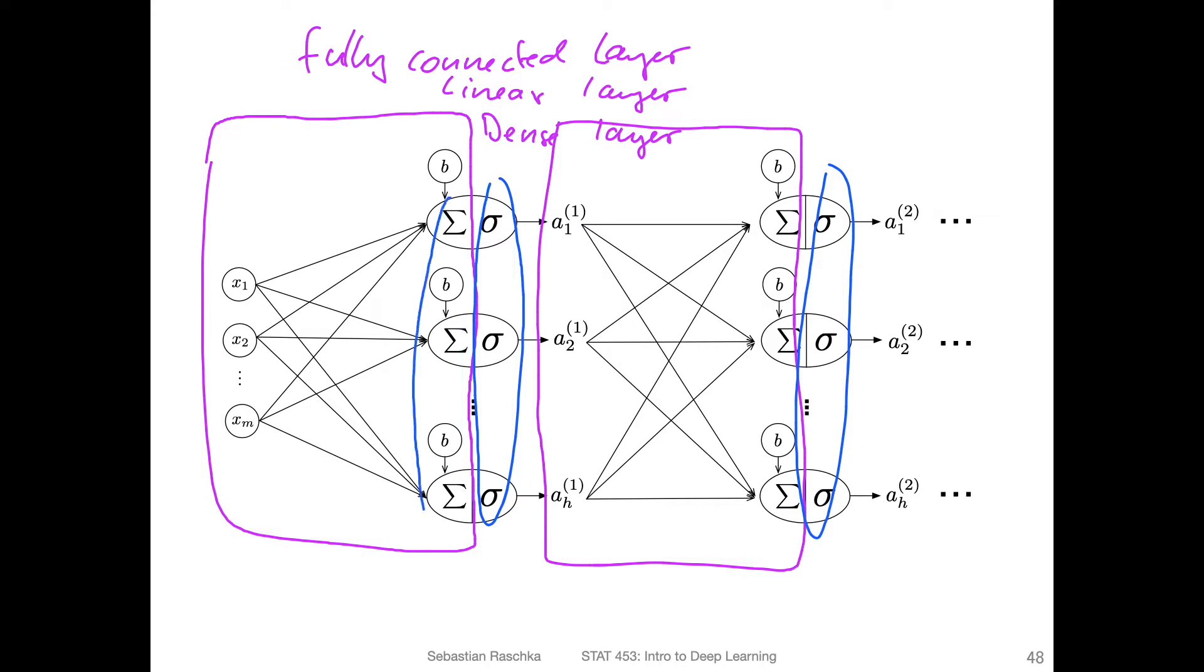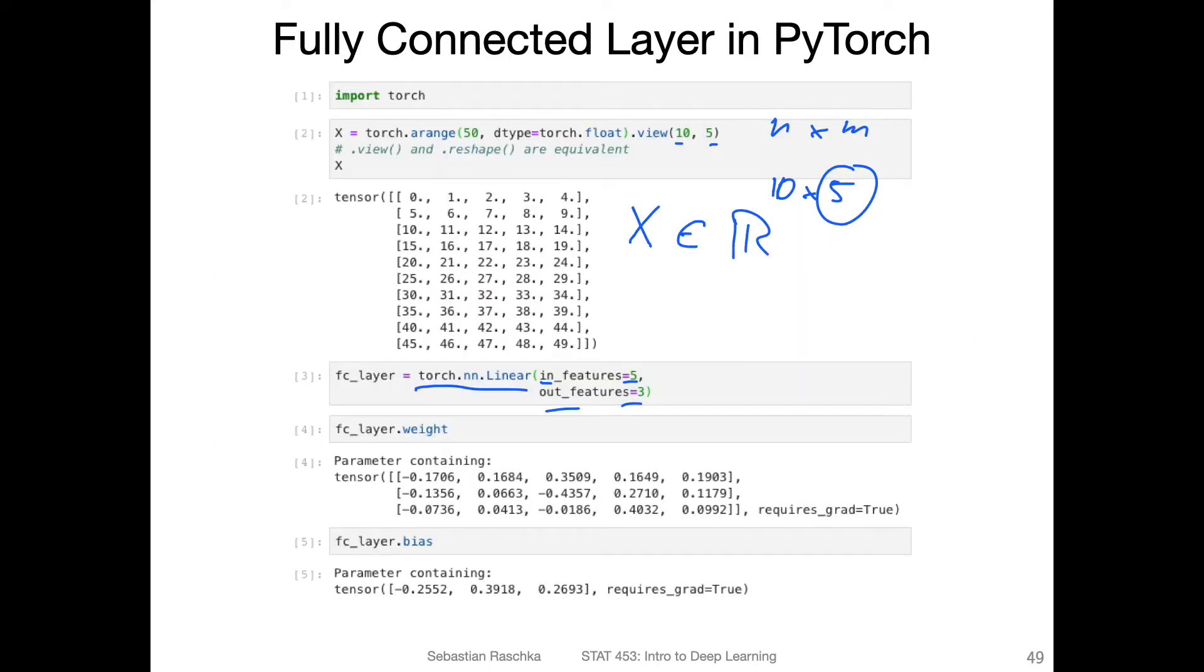The output features, if I go back one slide, are these here what I highlighted. You can think of it as these here, the net inputs. That's basically the number of outputs, and they are computed by this linear transformation.